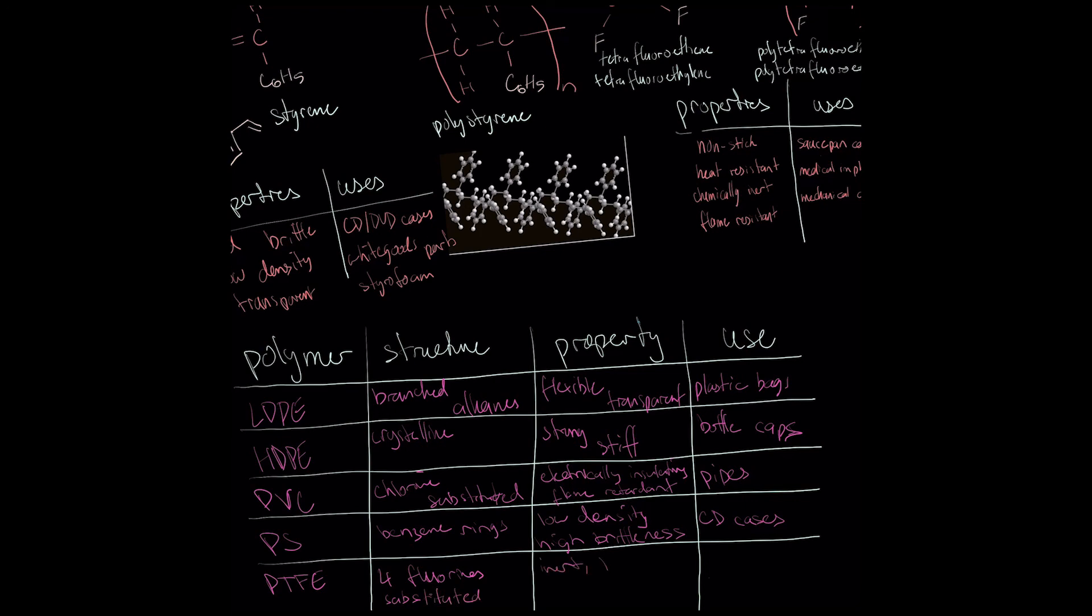PTFE has four fluorine atoms on each monomer, making it highly chemically inert, heat-resistant, and have low friction. Therefore, it is used in applications such as the coating on non-stick saucepans.